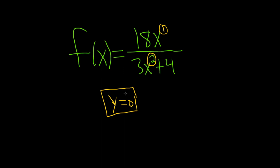If instead we had 18x squared over 3x squared plus 4, in this case they're the same. So whenever they match, all you do is divide the leading coefficients. In this case it would be 18 over 3, which is equal to 6.